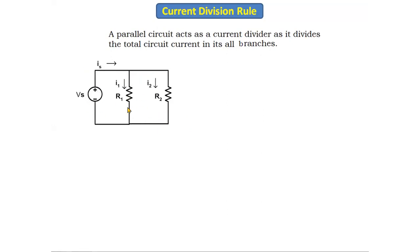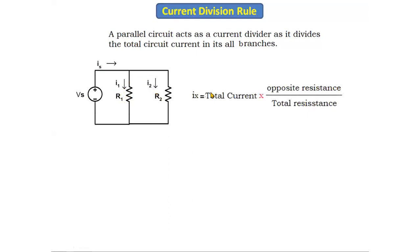Let's take a sample circuit which has two resistors connected in parallel. As we know, in a parallel circuit, current divides. There is a supply voltage, and the total current after the source divides into two parts, i1 and i2. These i1 and i2 are called dividing currents. Using the current division rule, we will find the i1 and i2 values.